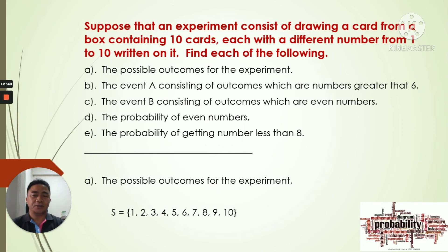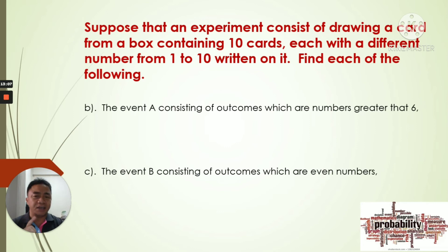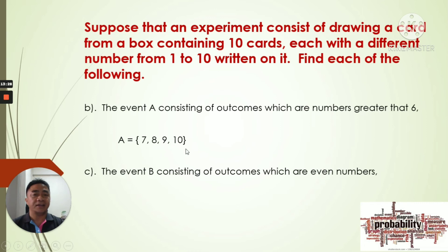Now we go to question B: the event A consisting of outcomes which are numbers greater than 6. From the sample space of 1 to 10, the numbers greater than 6 are 7, 8, 9, and 10. So the event A equals {7, 8, 9, 10}. Those are the elements of event A.